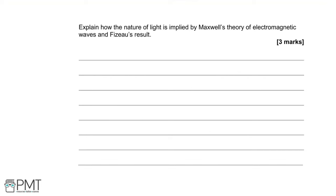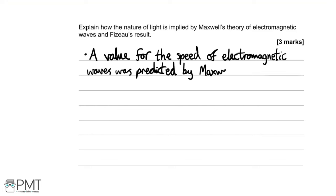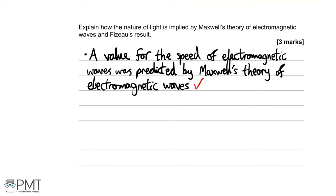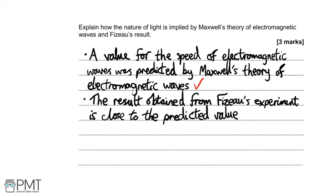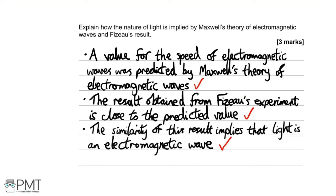Maxwell's theory of electromagnetic waves predicted a value for the speed of electromagnetic waves — that's the first mark. Fizeau's result is very close to that predicted speed — second mark. Combining these two points, the implication is that light is in fact an electromagnetic wave — third mark. Three marks total.